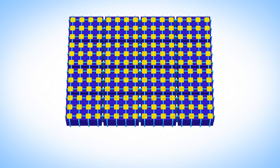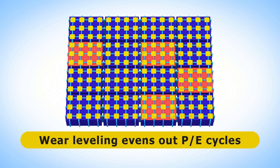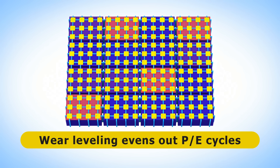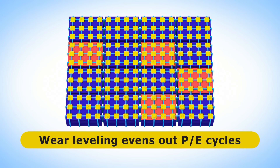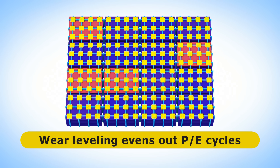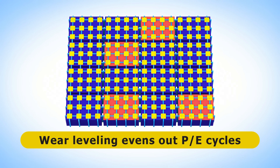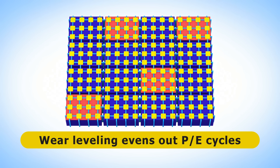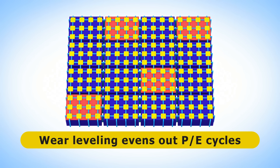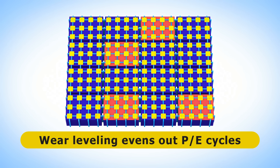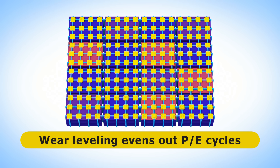In order to maximise their life expectancy, SSDs use a technique called wear levelling that moves data around the drive to even out program-erase cycles. This occurs at the block level and can happen most effectively on drives with a reasonable amount of free space. So if possible, it's wise to never have an SSD more than 90% full in order to make it last longer.